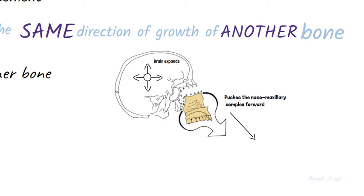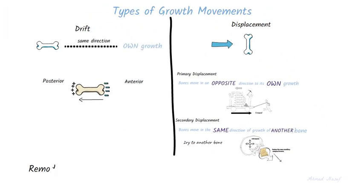One more term we will cover in this video is remodeling. It's not a kind of movement but simply the change in size and shape of a bone as a result of differential bone resorption on one side and deposition on another side. Note that the remodeling process is not always in the opposite direction of displacement.